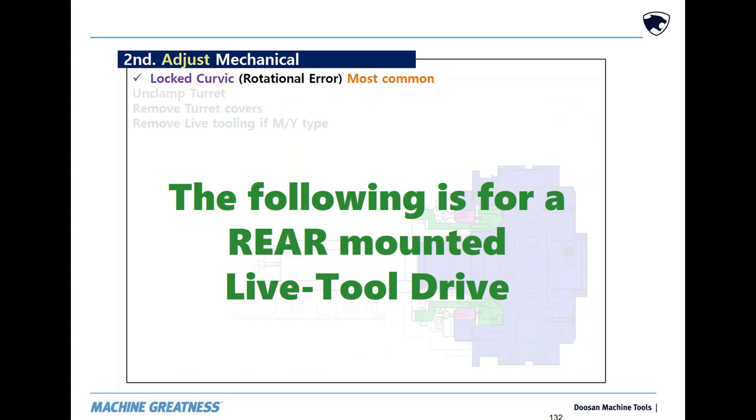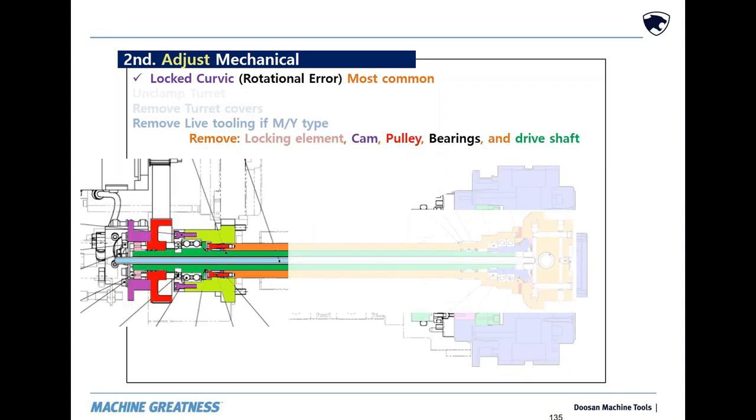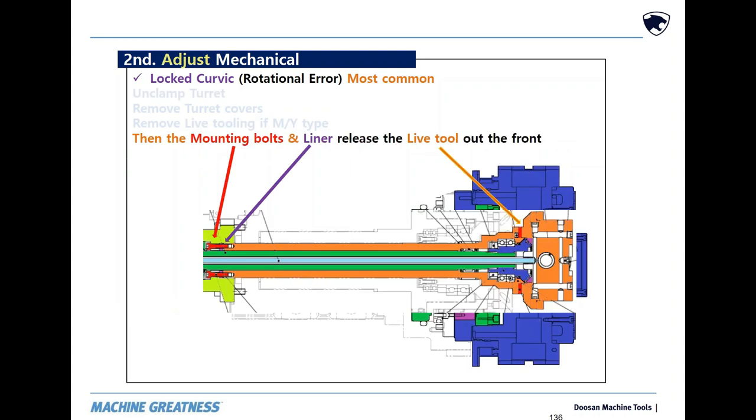Every machine prior to 2013 and some after used rear mounted live tool systems. In a rear mount system, the mounting bolts pass through the back of the chassis to support the live tool drive. To remove a live tool drive through the front, the cam, the pulley, and the bearings must be removed to get to the mounting bolts of the live tool drive. Undo bolts and remove the live tool drive and spacer through the front of the turret.